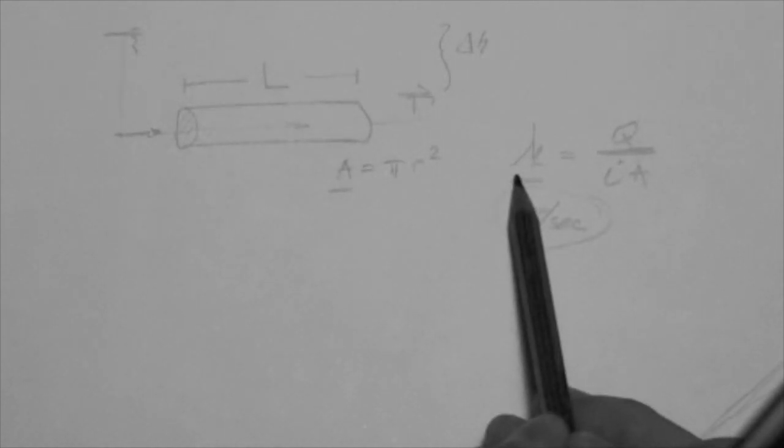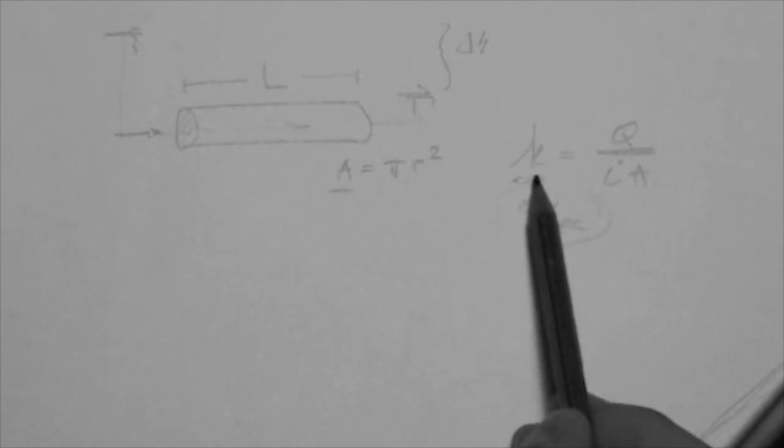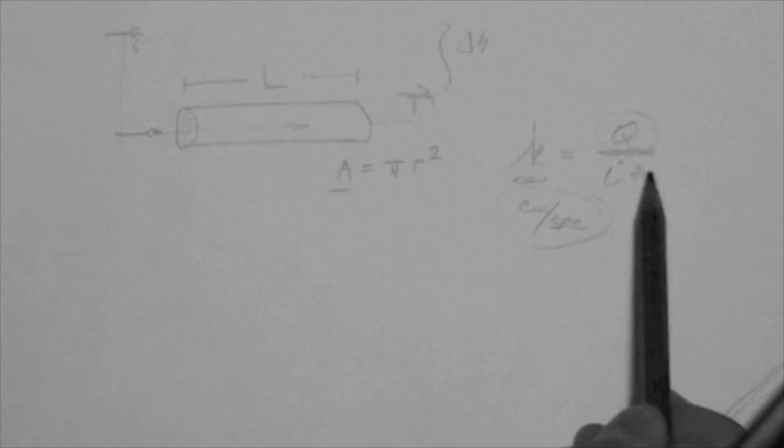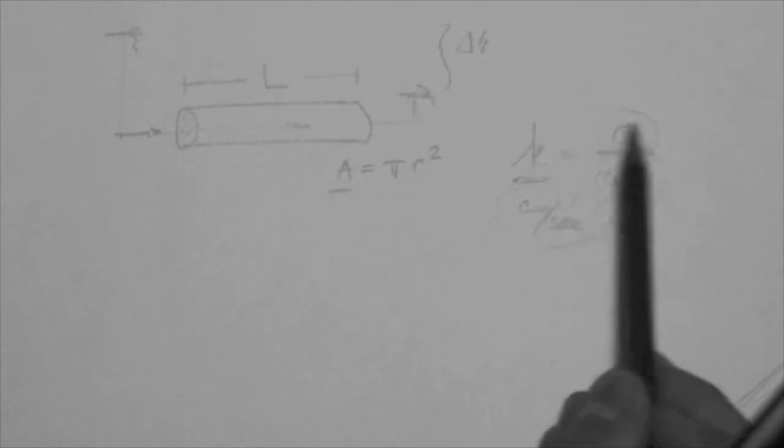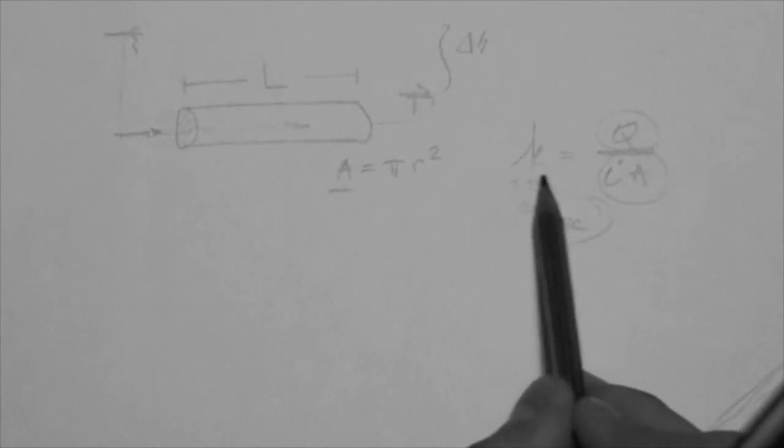If you answer that the velocity is K, you are wrong, because remember that K is the proportionality between Q and IA. It's just a proportion, just a ratio of these two. It's not a velocity.